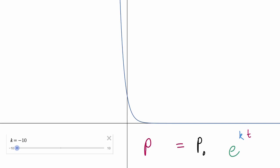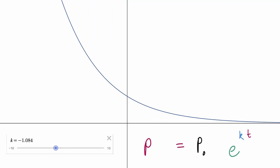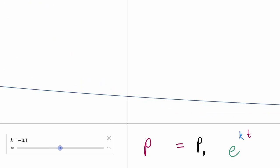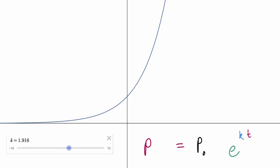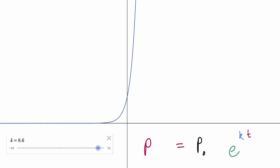Let's look at these exponential graphs in a little more detail. Here I'm changing the growth constant k, starting with a very negative value of k. Now you can see k has become a positive value, and you can see the really distinct change in the shape of the graph as k goes from negative to positive.